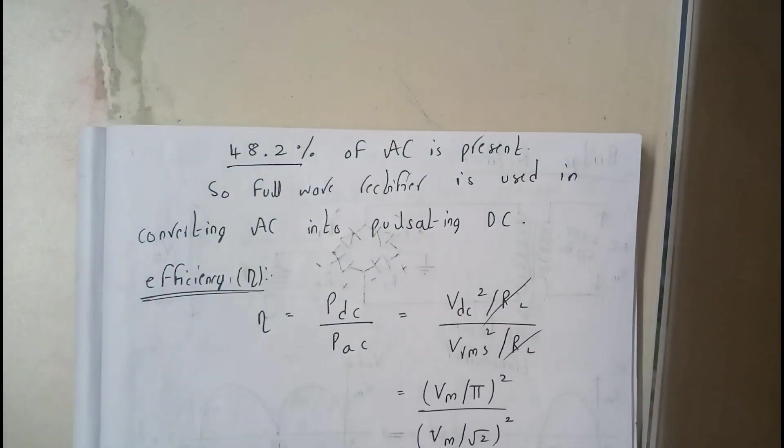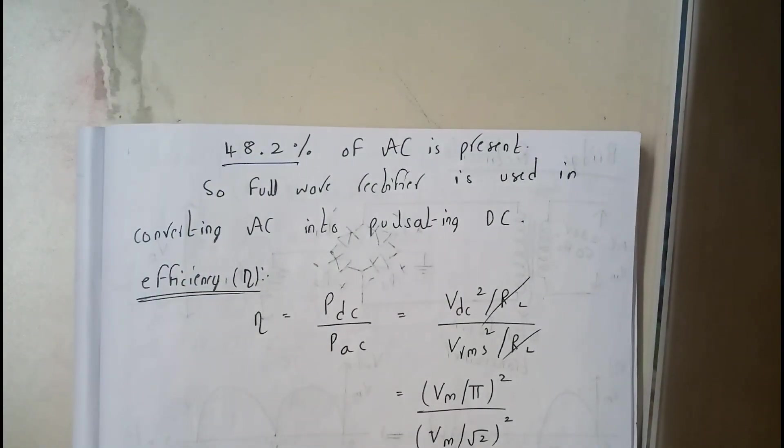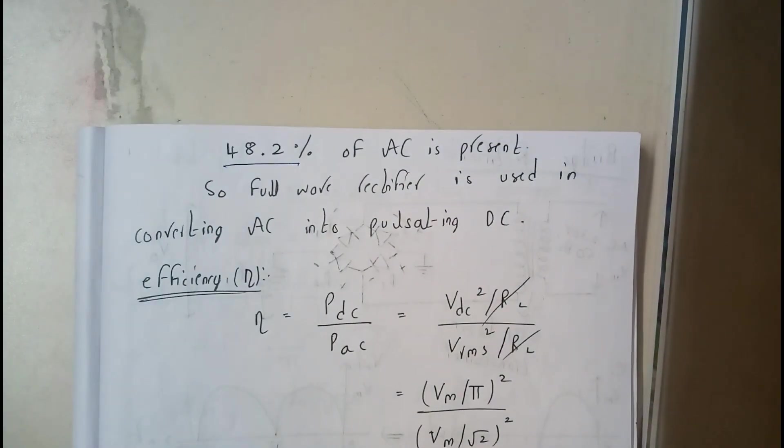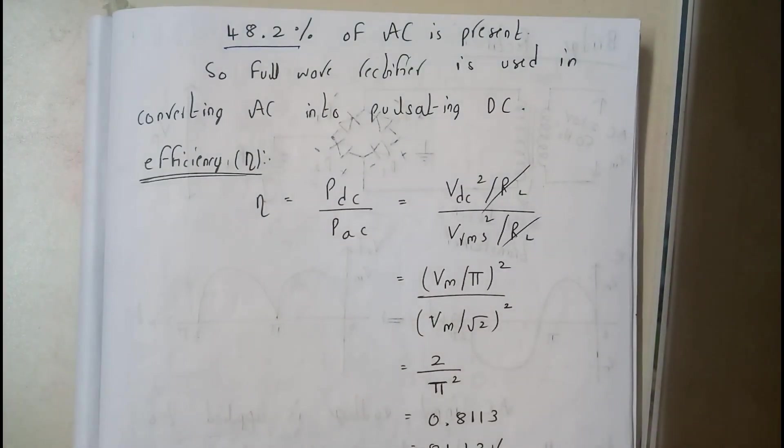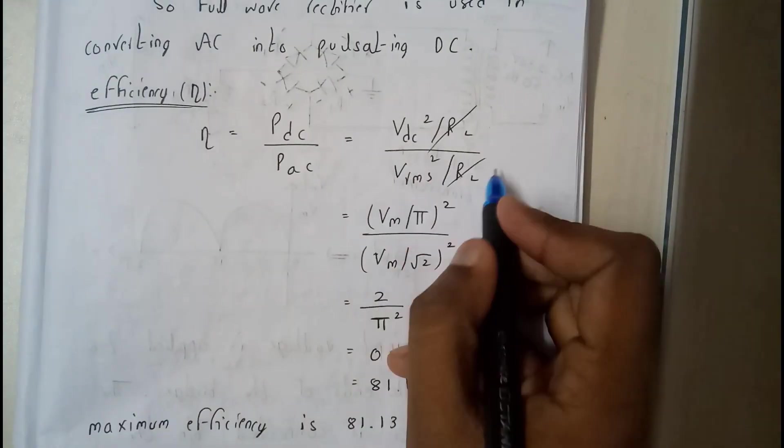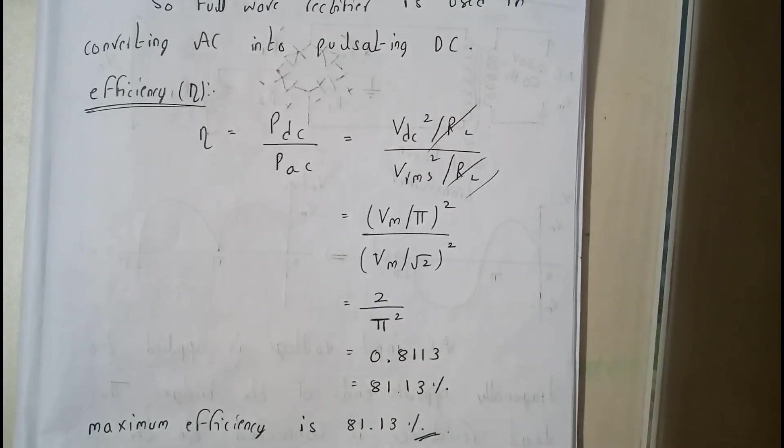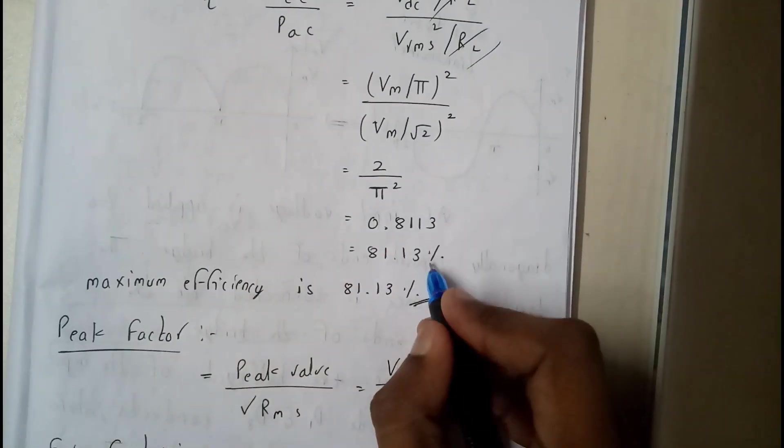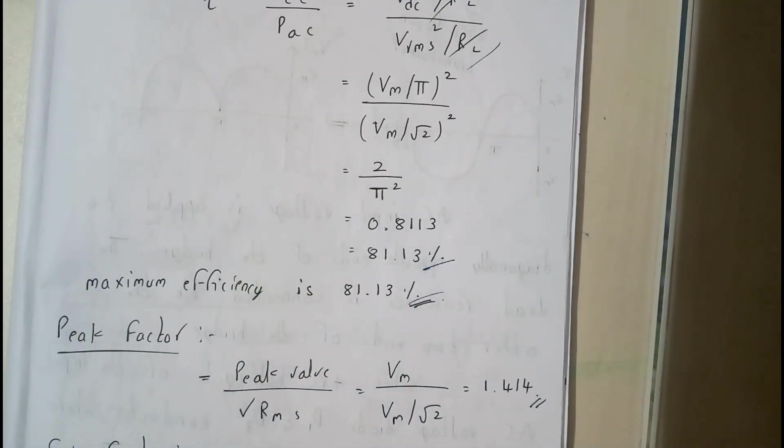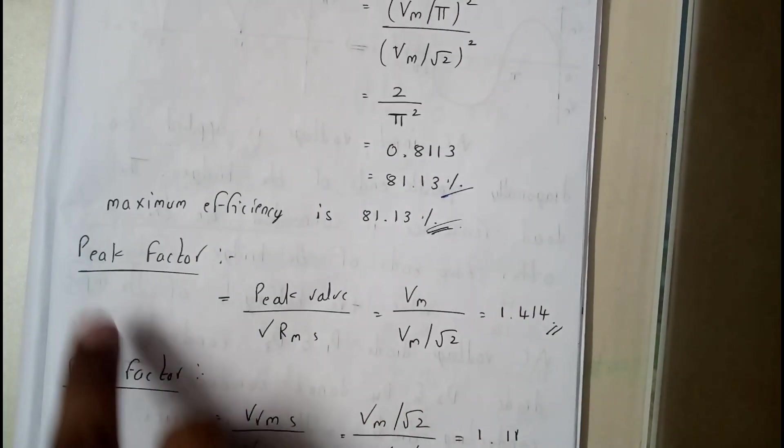A full-wave rectifier is used in converting AC into pulsating DC. Almost 50% is removed. If you want to go to efficiency—efficiency is output by input. In output we'll be getting DC supply, so DC output by AC input. That's what we have written here: V_dc squared by R_L divided by V_rms squared by R_L. Once we substitute the values, we got 81.13%. The efficiency is almost double of the half-wave.